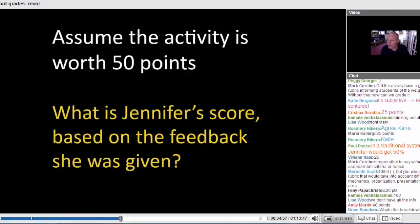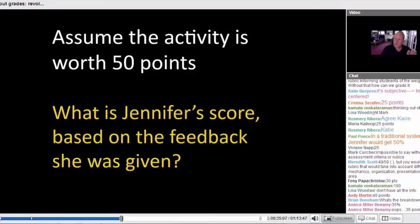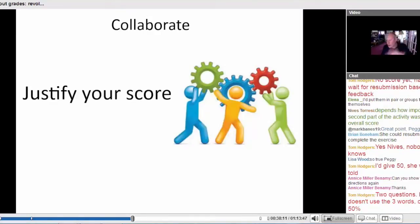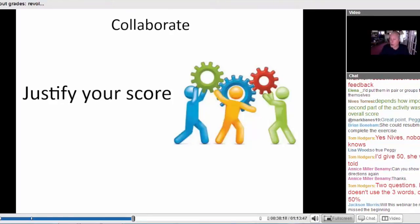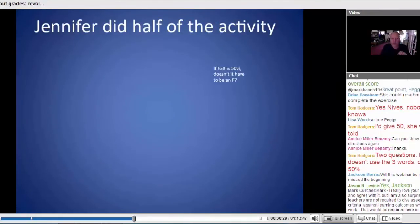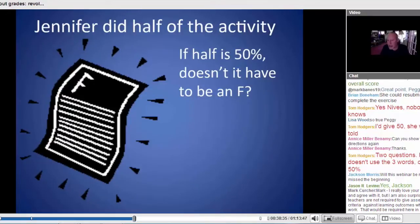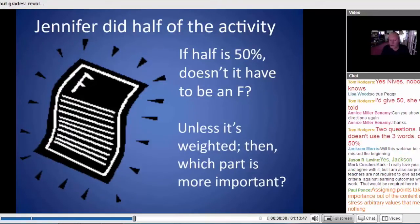So just type it in like Christina did, 25 points. Maria says 25 points. Paul says in a traditional system she gets 50% because she did half. Mark says impossible to say without an assessment criteria or rubrics. And then here someone says 40 out of 50. Again, you need a rubric. See now what we're talking about, someone else says 30. I see 40, 35%. Now look at the differences here. So what we've done is this. I guess I should have put this slide up while we were talking. We're sort of collaborating in our window here. People are discussing and talking about it and talking about waiting and asking different questions.